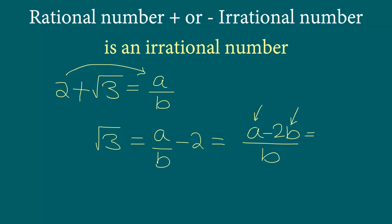So what we are going to get here is an integer in the numerator divided by another integer, and we know that b is not equal to 0. So what we have is square root 3 equals integer over integer.